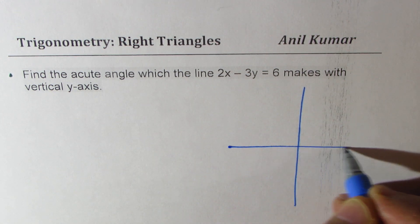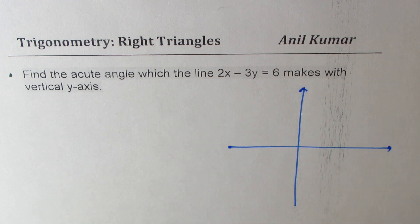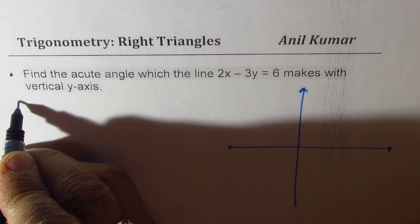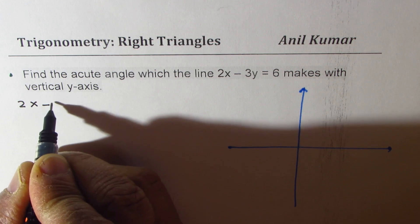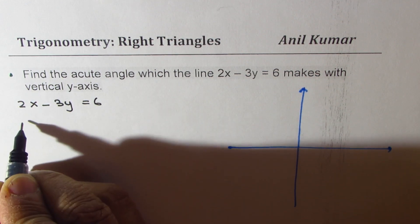We'll actually sketch this line and then find the solution. We are given the equation of the line as 2x minus 3y equals to 6. Let's rearrange.